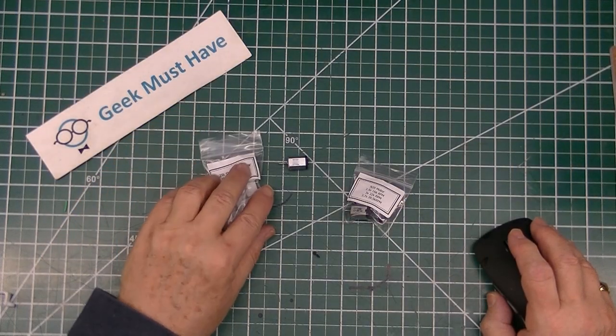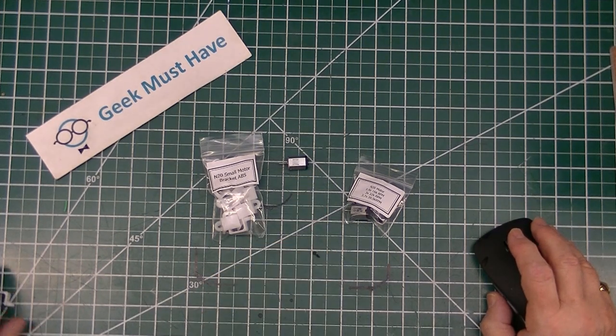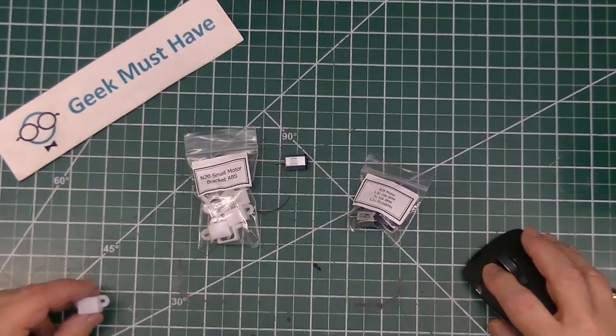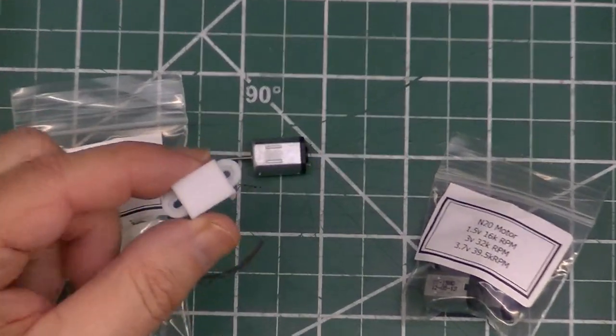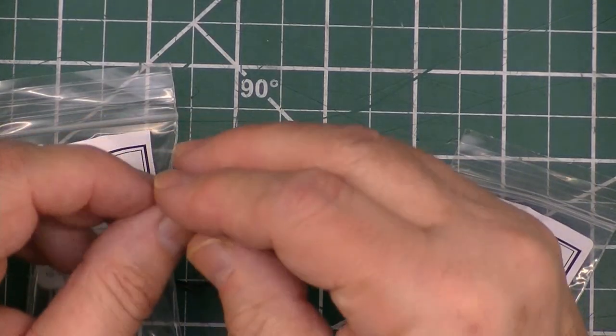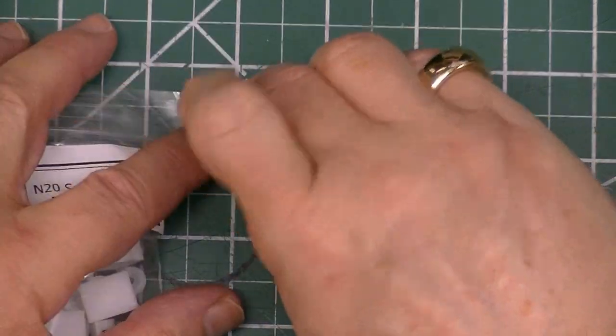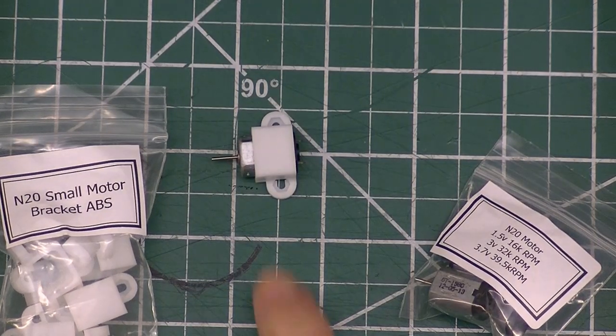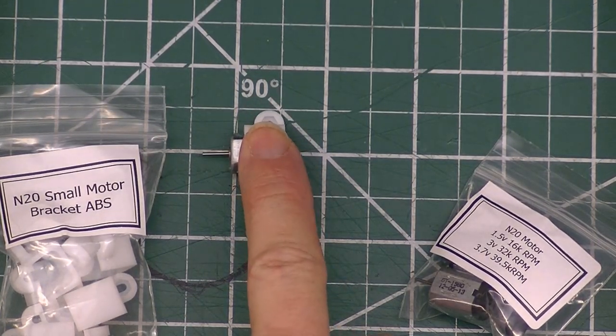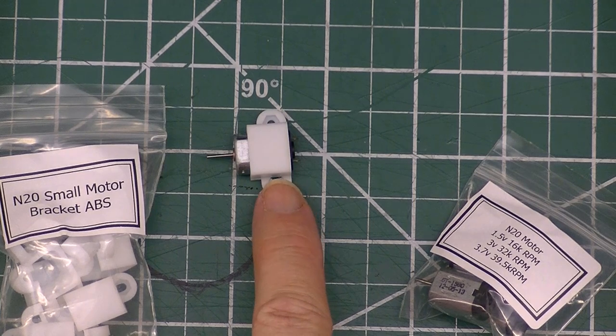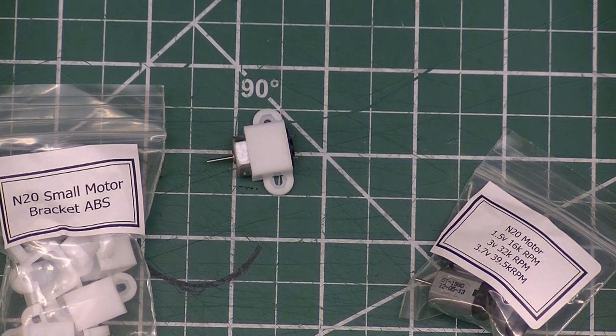The next item goes along with this N20 motor. These are little mounts made out of plastic. They basically go over the motor and allow you to screw it down to a surface pretty securely. These are little N20 motor mounts made out of ABS plastic.